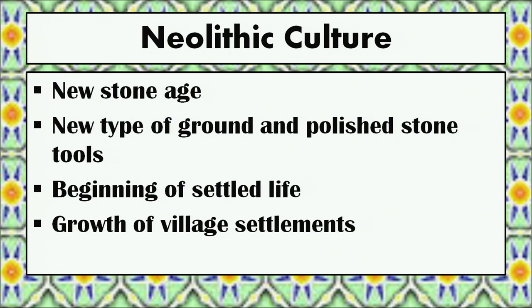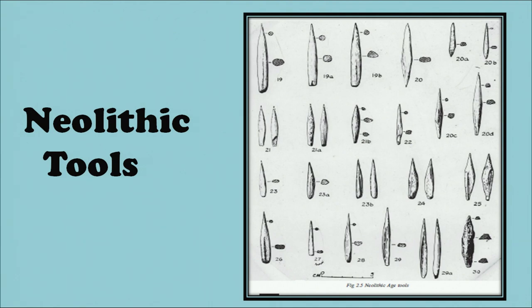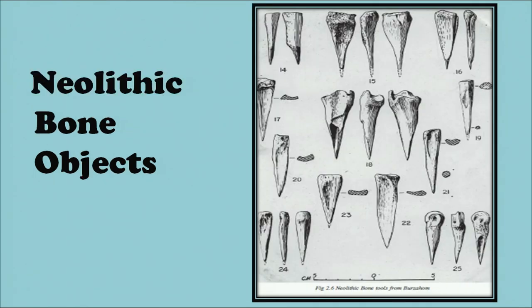The last phase of the prehistoric period is termed the Neolithic age. The term Neolithic is derived from the Greek word 'neo' meaning new and 'lithic' meaning stone – thus the Neolithic age refers to the New Stone Age. The Neolithic tools had smooth surfaces and were rounded in shape, more sharp and polished than those made in earlier periods. The Neolithic tools included different types of axes called celts. Various types of bone objects such as needles, scrapers, borers, pendants, bangles and earrings have also been found from Neolithic sites.